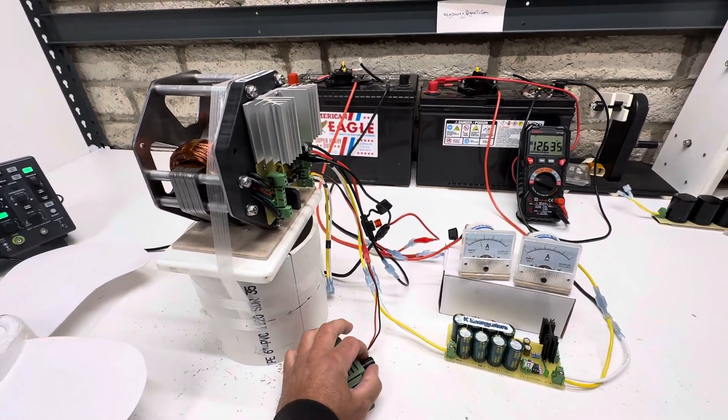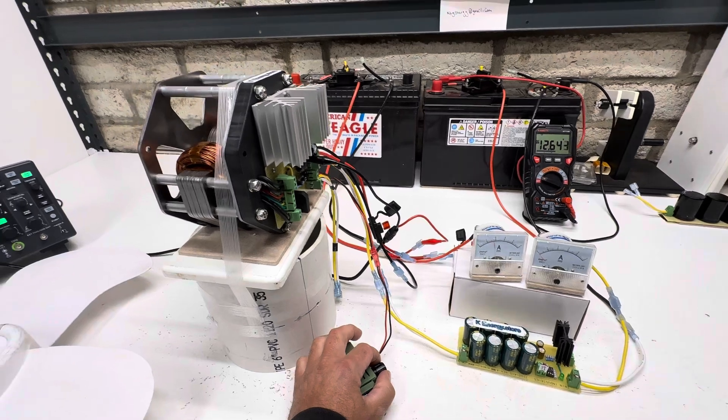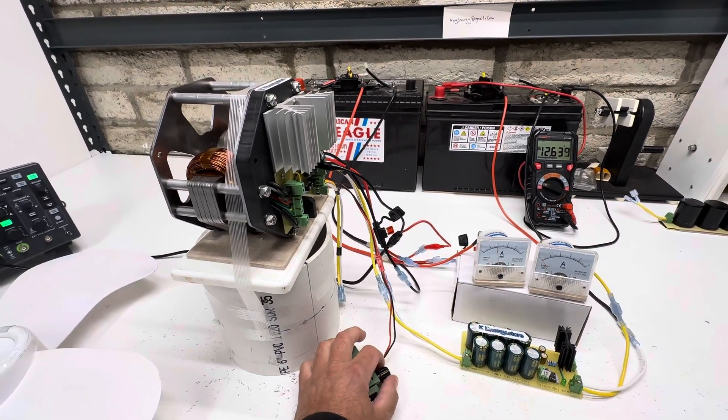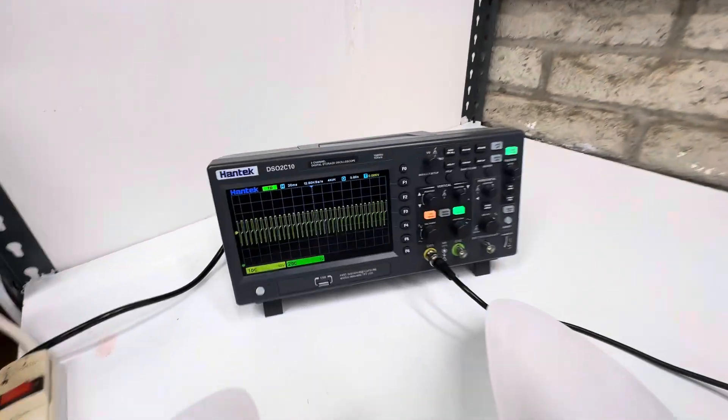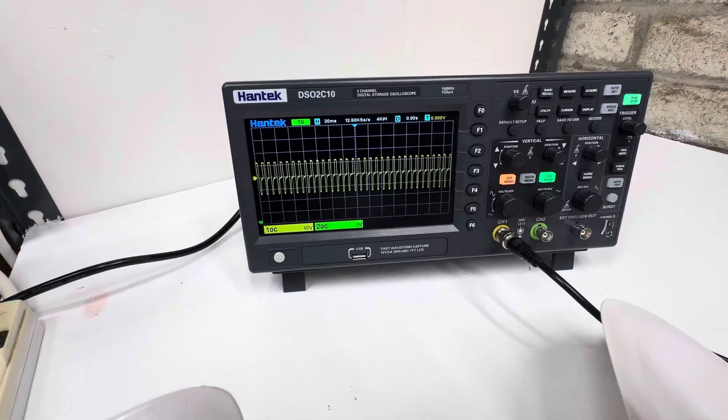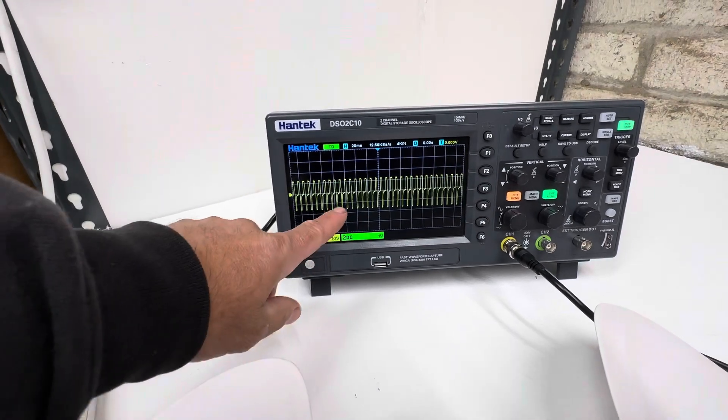This motor likes to be ran at full power. At full power, this is about 1300 RPMs. You can see on the scope it's a really clean waveform, and you see the bottom here it's charging the capacitor.